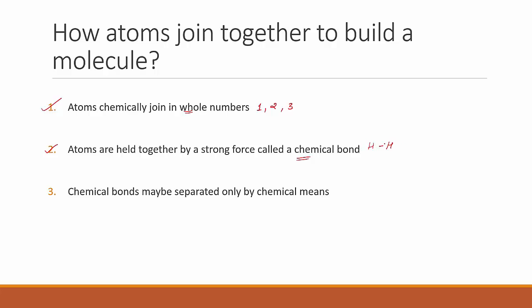If hydrogen atom and another hydrogen atom are joined, the chemical bond holds them together. Importantly, chemical bonds may be separated only by chemical means — they cannot be separated by physical means such as filtration or distillation. You need to add chemicals in order to break chemical bonds.